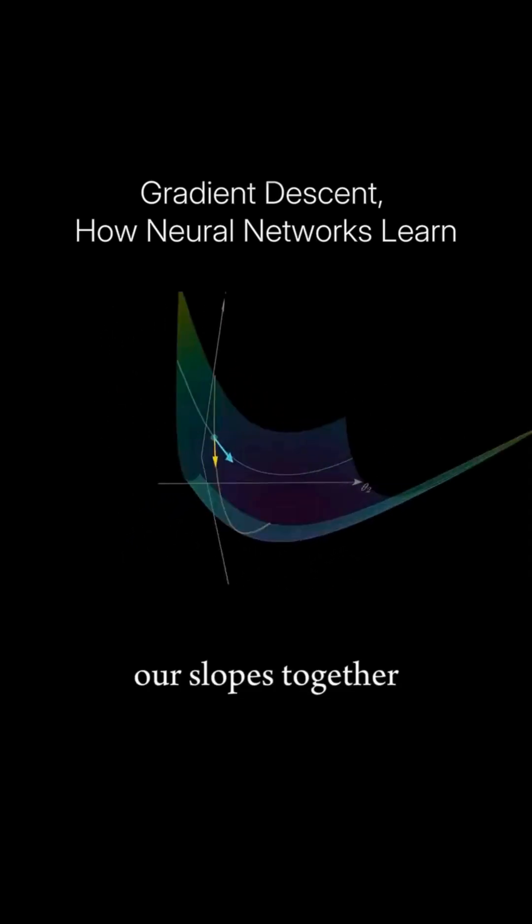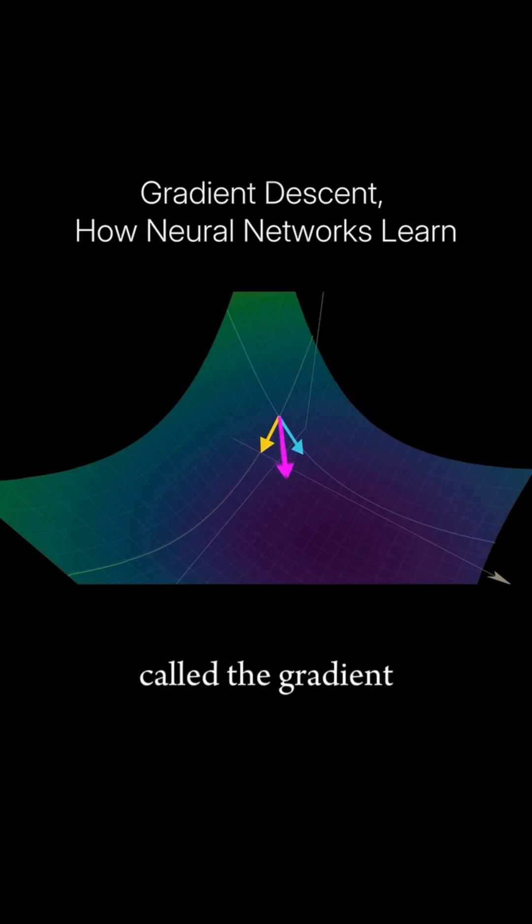From here, we can put our slopes together into a single vector called the gradient, which acts like a little compass that points us downhill.